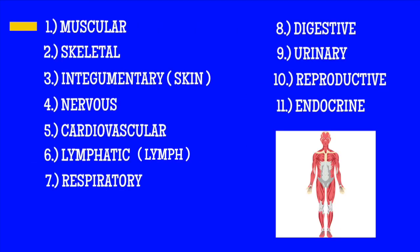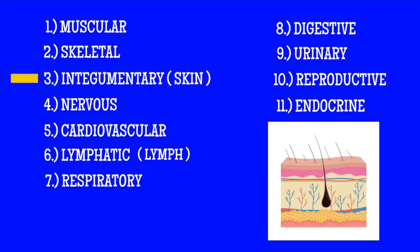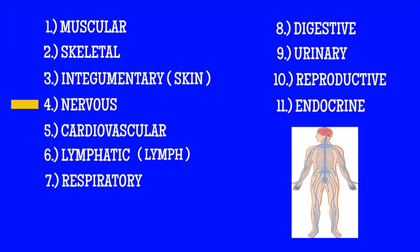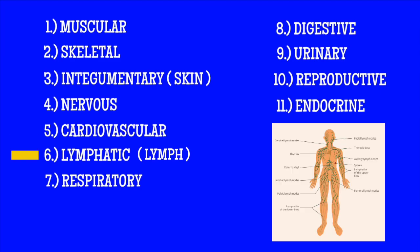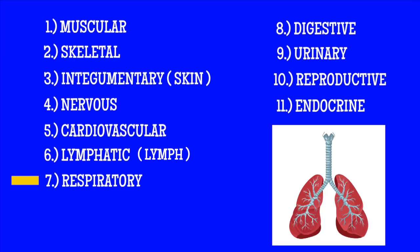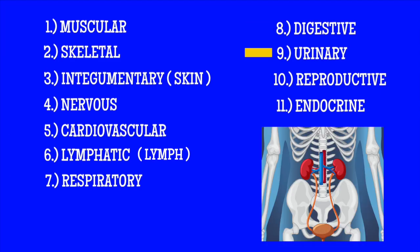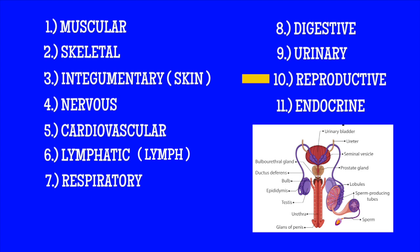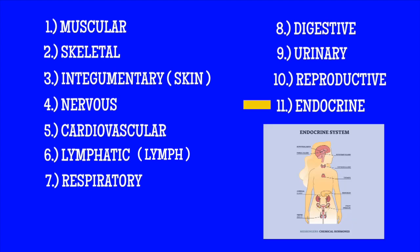Here we go again — muscular, skeletal and skin, integumentary, nervous, cardio and limb, lymphatic, respiratory, digestive, urinary, reproductive and the endocrine.